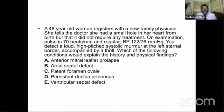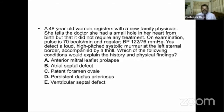PDA murmur is continuous — not purely systolic. The remaining option is ventricular septal defect. In VSD there is a systolic murmur at the left sternal border, accompanied by a thrill, radiating from the left to the right side. So this lady's condition is ventricular septal defect — a shunting anomaly within the heart. VSD is the correct answer.